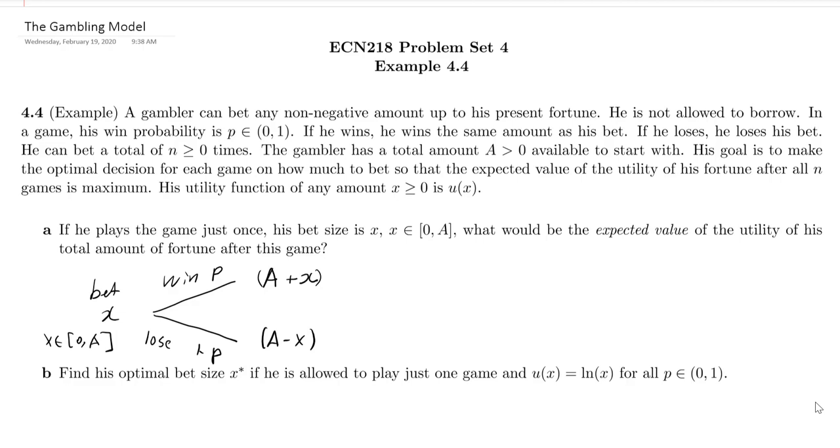Now, after we get these numbers, the fortune, we need to find out the utility, the utility part. And since here the utility function is abstract, so we can say u of A plus x. That would be the utility of the amount if he wins. And then you look at utility if he loses, that's the one.